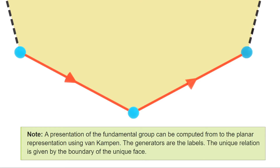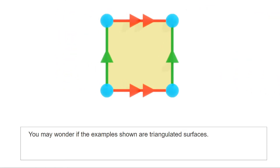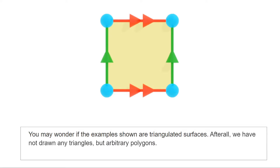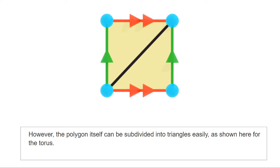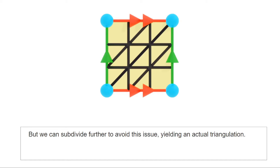At this point, you may be wondering whether the surfaces we've shown are in fact triangulated surfaces. Any polygon can be subdivided into triangles, but it is not enough that we produce triangular faces — in a triangulation, faces must intersect along an edge, a vertex, or not at all. However, this is not a problem because it is always possible to subdivide further both edges and faces in order to produce an actual triangulation.